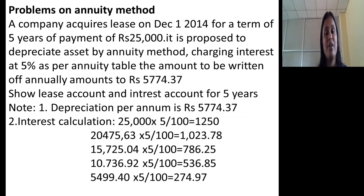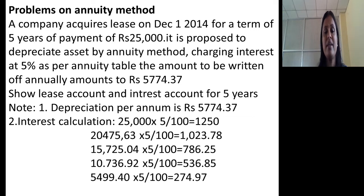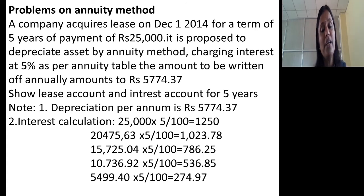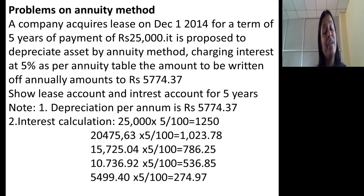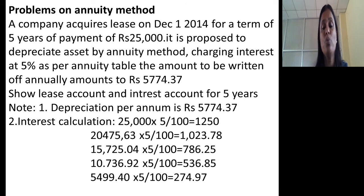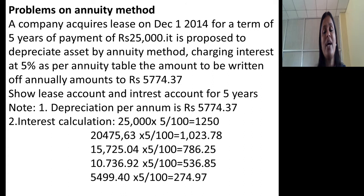Let me look at a problem on annuity method. A company acquires a lease on 1st January 2014 for a term of 5 years at a payment of Rs. 25,000. It is proposed to depreciate the asset by annuity method, charging interest at 5%. As per the annuity table, the amount of annual annuity amounts to Rs. 5,774.37. So, the depreciation every year is directly given in this problem. Sometimes they will give the annuity table value, and then we should calculate the depreciation ourselves. But in this problem, the annual depreciation is clearly given as Rs. 5,774.37, which is the fixed amount of depreciation every year. So we need to calculate only the interest in this problem.